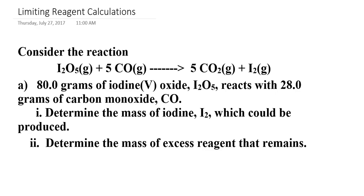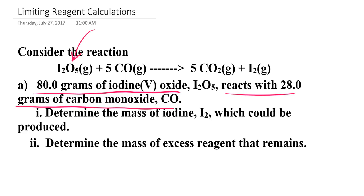They won't always be clearly labeled and sometimes the word limiting reactant or limiting reagent does not appear in the problem. The telltale sign is right here: if you take a look at this problem, notice they tell you that I have 80 grams of the iodine 5 oxide, and I'm also told that I have 28 grams of carbon monoxide. Whenever I'm given information about more than one reactant involved in a chemical reaction, that automatically should put a red flag up saying this is a limiting reagent calculation.